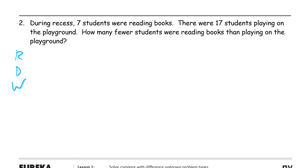During recess, seven students are reading books. There were 17 students playing on the playground. How many fewer students are reading books than playing on the playground? So we've got recess students — some students reading books, some students are playing — and there are fewer students reading books, and we have to find out how many fewer.